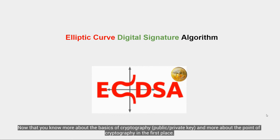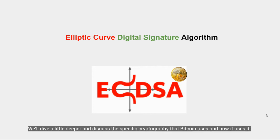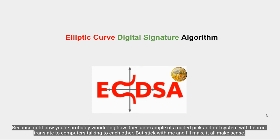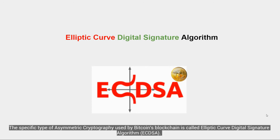Now that you hopefully know more about the basics of cryptography — private key, public key, and the whole point of cryptography — we'll dive a little deeper and discuss the specific cryptography that Bitcoin uses and how it uses it. Right now you're probably asking how does an example of a coded pick-and-roll system with LeBron translate to computers talking to each other, and if you stick with me I'll make it all make sense. The specific type of asymmetric cryptography used by Bitcoin's blockchain is called Elliptic Curve Digital Signature Algorithm.